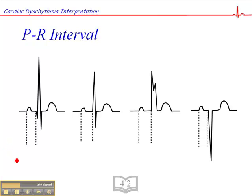The QRS morphology may be a little different in certain rhythms. In this first example, we calculate the PR interval based on the onset of the P wave to the onset of the Q wave, because there is a Q wave in this case. In this second rhythm there isn't a Q wave, so we measure from the beginning of the P wave to the beginning of the R wave — in other words, the beginning of the QRS complex.